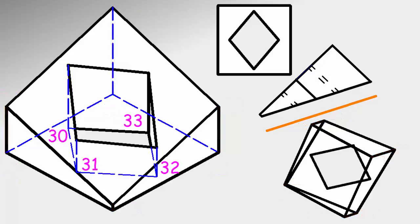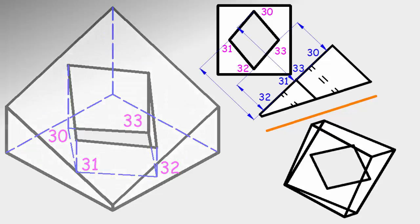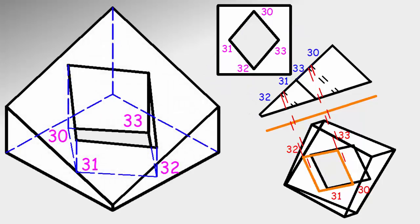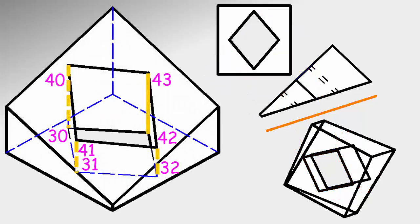Now for the other end of the missing hole. The process is the same: measure the departures, take them to the other view, and join them. We must not forget to attach the ends of the hole.